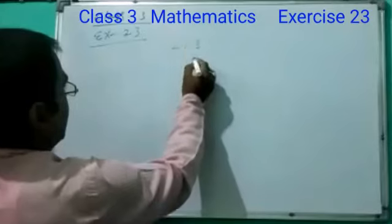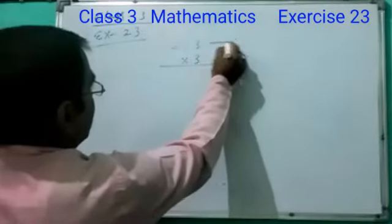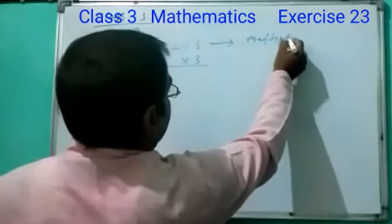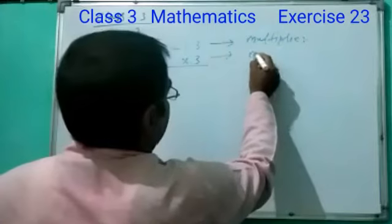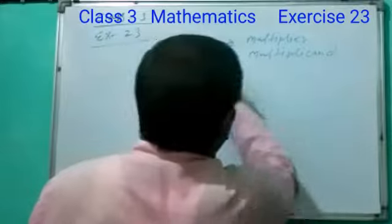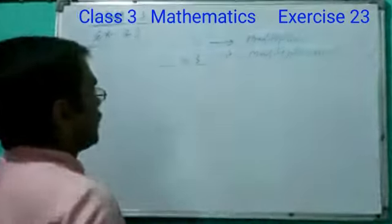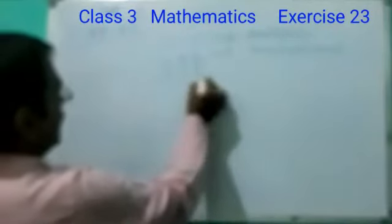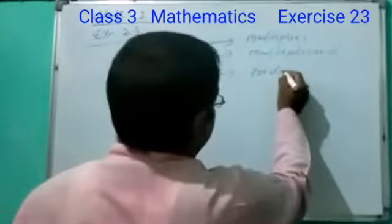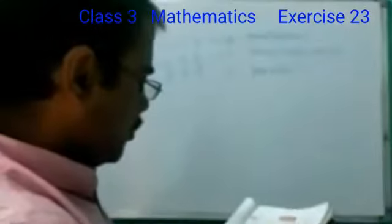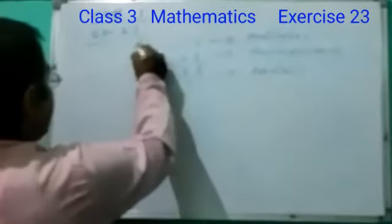213 into 3. Here you see the multiplier and multiplicand. It is multiplication. We can find your product. 3 into 3 equals 9, 3 into 1 equals 3, 3 into 2 equals 6. It is your product. I think you all know about question number 1.